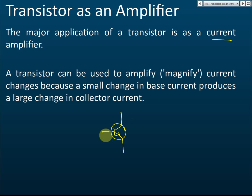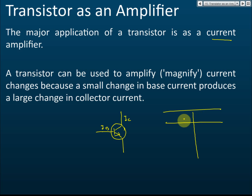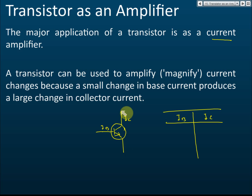Let's consider an NPN transistor and label the three currents: IC (collector current) and IB (base current). The collector current is always higher than the base current. The base controls the collector — if there is no current flow in the base, there is no current flow in the collector, even in a closed collector circuit. So when IB equals zero, IC must also equal zero.